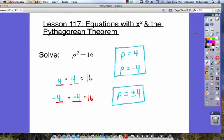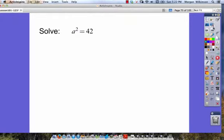Let's look at another problem with an x squared or p squared type of equation. Let's solve a squared is equal to 42. Do you know what number times itself is equal to 42?